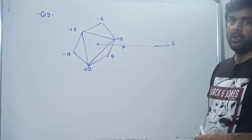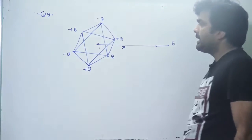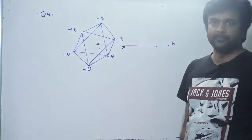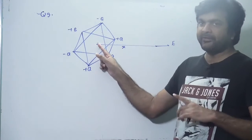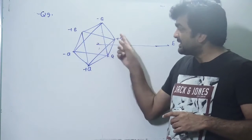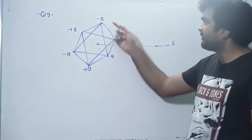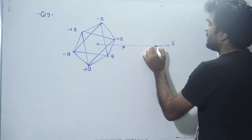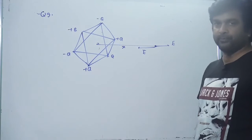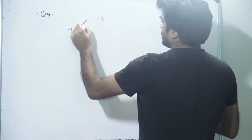Now by symmetry, if we take the three charges which are -Q, these three charges also lie on an equilateral triangle and the center of the hexagon is also the centroid of that equilateral triangle. If these three positive charges created an electric field E outward, these three negative charges must create an electric field E inward, so the net field at this point should be equal to zero.